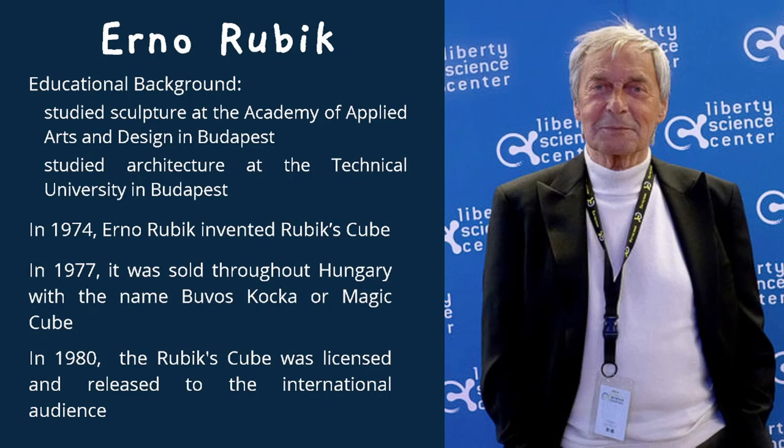A year later, he patented the cube, and in 1977, the cube was sold throughout Hungary with the name Buvos Kocka, or the Magic Cube. Then, in 1980, Rubik partnered with Ideal Toy Company to create an international market for the cube, which was named the Rubik's Cube. That is how the Rubik's Cube came to be.